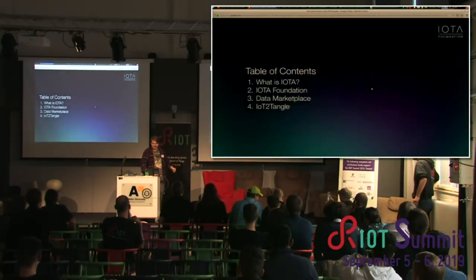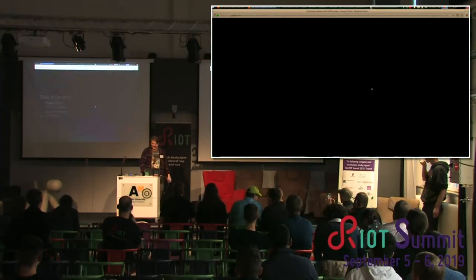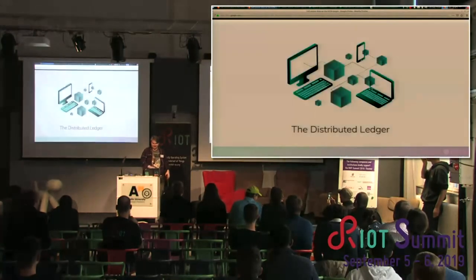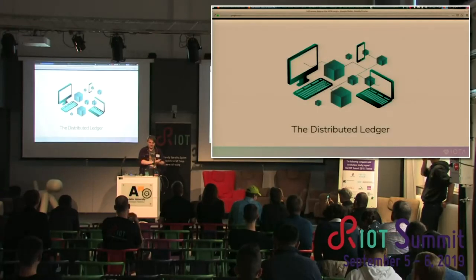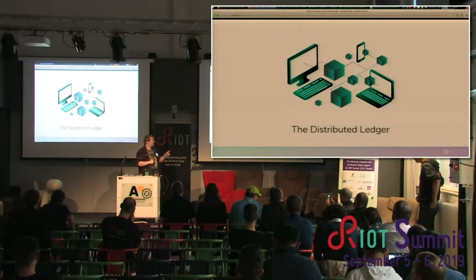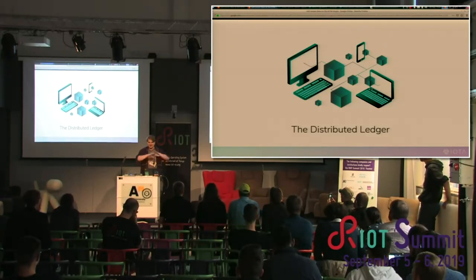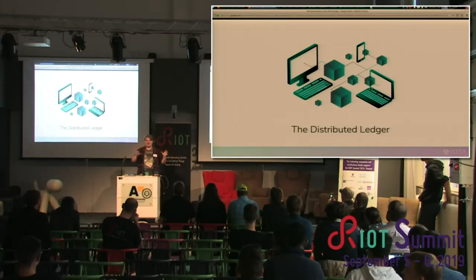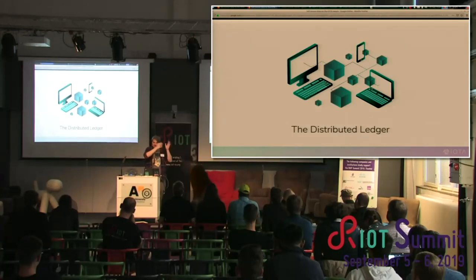What is IOTA? Probably some of you might have researched it, hopefully. But I will go into a summary of how IOTA works. The first thing we have to say: IOTA is not a blockchain. It's a distributed ledger. Forget talking about blockchain — we're now talking about distributed ledger in general, because there are now different kinds of technologies, and blockchain is just one of them.